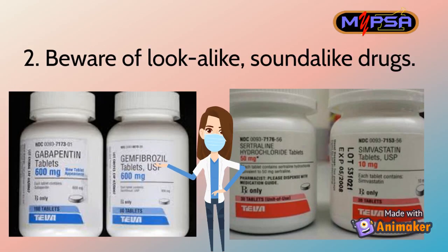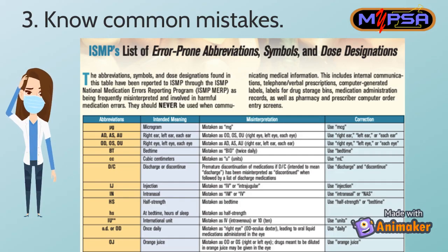Next, be aware of look-alike and sound-alike drugs. Similar names and packaging lead to many errors. The way to prevent this problem is to highlight those medications on your shelves and in your computer system so that staff members are paying attention. Also, download a copy of the Institute for Safe Medication Practices list of error-prone abbreviations, symbols, and dose designations and train staff members to recognize potential errors.